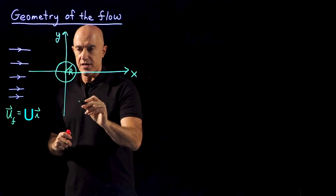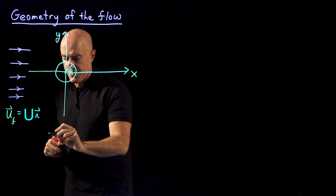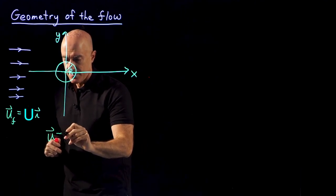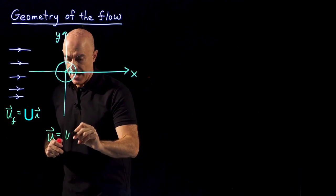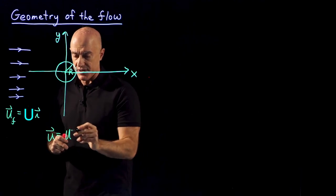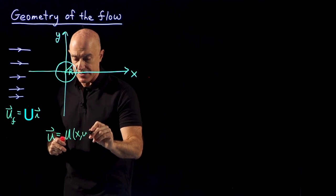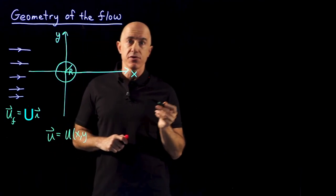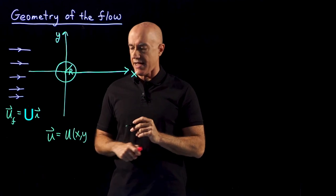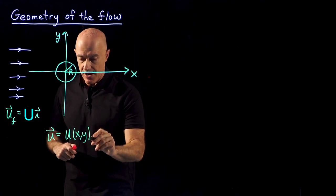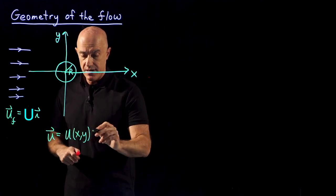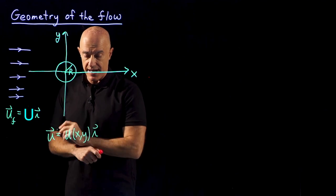In that case, we can write the velocity field as a component in the x-direction, which I'll call scalar u, that depends only on x and y. It may also depend on time for unsteady flows. Here I'll leave the time dependence out. And this is in the x-direction.